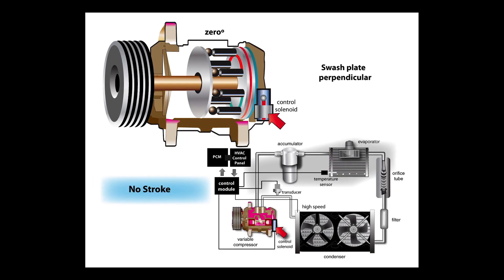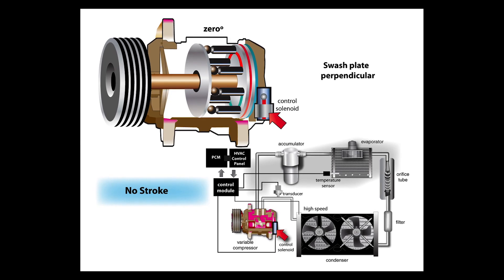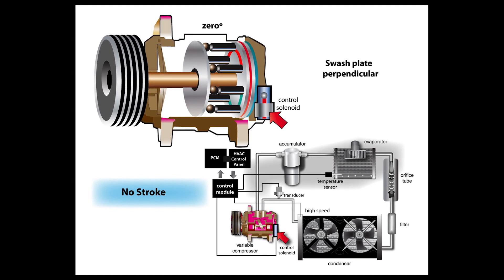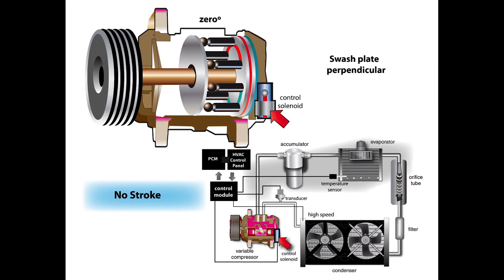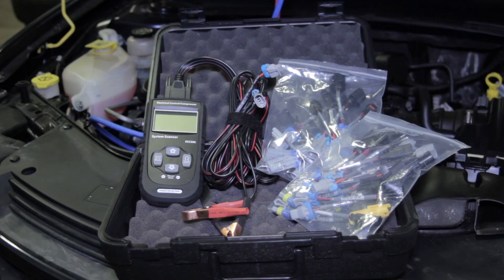So quite often the technician has no clue where the problem is. We don't know if the computer is actually commanding it or if the compressor is actually doing the job. That's where a tool such as this comes into play. Sure you could use a lab scope and back probe it to read the control there, but it doesn't allow you to manually control it yourselves.